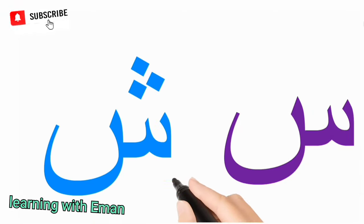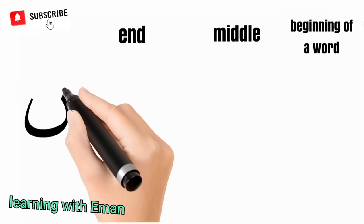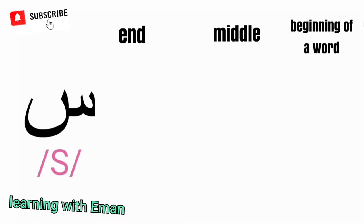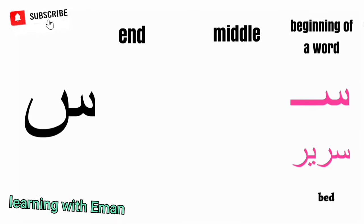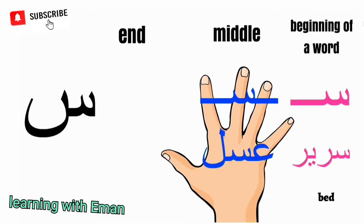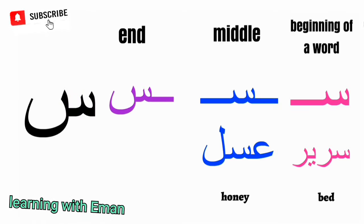The next letters of the Arabic alphabet are Seen and Sheen. Seen and Sheen look very similar except that Seen has no dots and Sheen has three dots on top. Seen is equivalent to the letter S. At the beginning of a word, like 'Serir', meaning bed. At the middle of a word, like 'Asal', meaning honey. At the end of a word, like 'Shems', meaning sun.